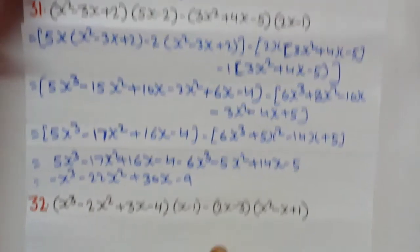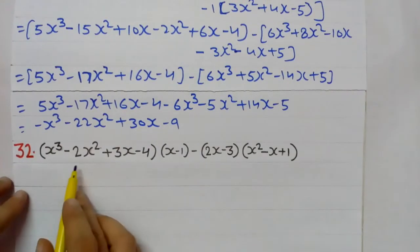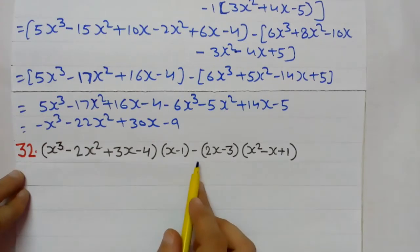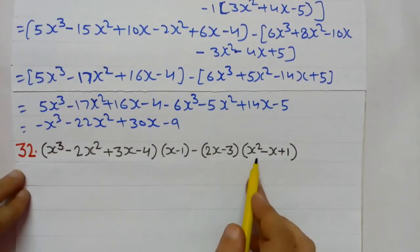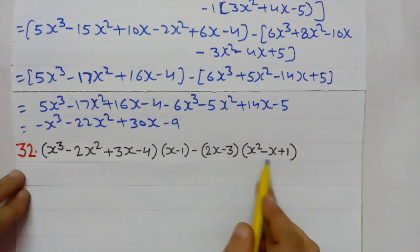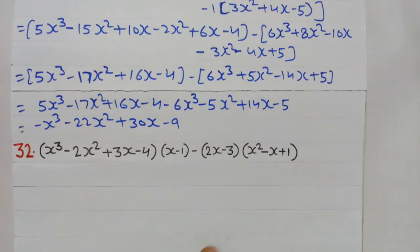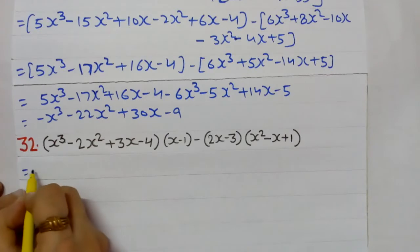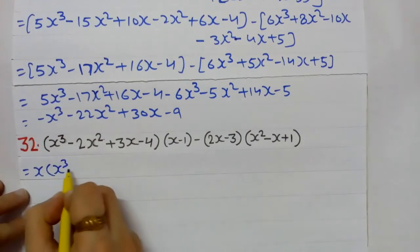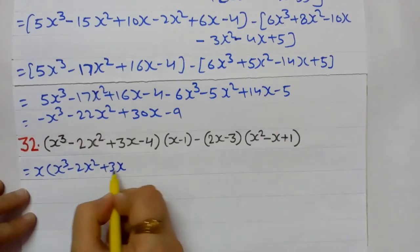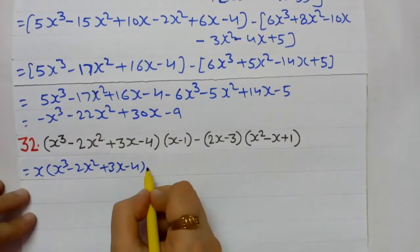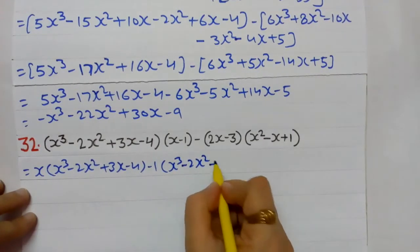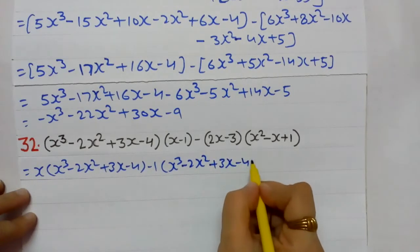Next question: (x³ − 2x² + 3x − 4)(x − 1) − (2x − 3)(x² − x + 1). I apply the distributive property here too. Very carefully: I break the second bracket — x multiplied by the first bracket (x³ − 2x² + 3x − 4), minus 1 multiplied by the first bracket (x³ − 2x² + 3x − 4).